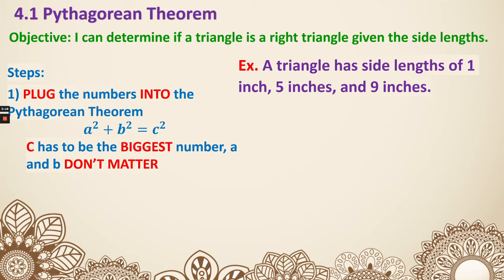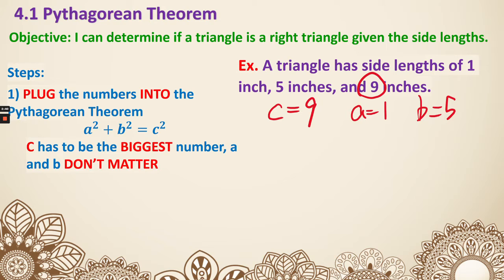A and B don't quite matter. So in this example, the first thing is to find your C. The longest side is 9, so C equals 9. That means A is 1 and B is 5 — the order doesn't quite matter. Next, we put them into the equation. The left side is 1 squared plus 5 squared, because A is 1 and B is 5. The right side is 9 squared. I don't know if they're equal — I'm going to check that. That's how we decide for the right triangle.